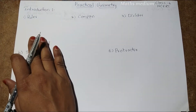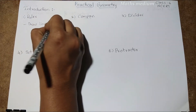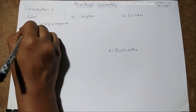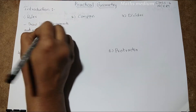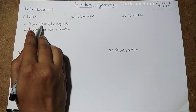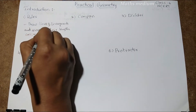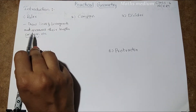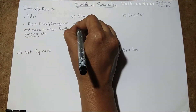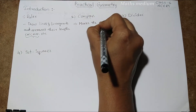Let's take the ruler. It is used to draw lines and line segments, and also measures their lengths. It means if you draw any line, the ruler measures how many centimeters or millimeters that line is. So that is the ruler.